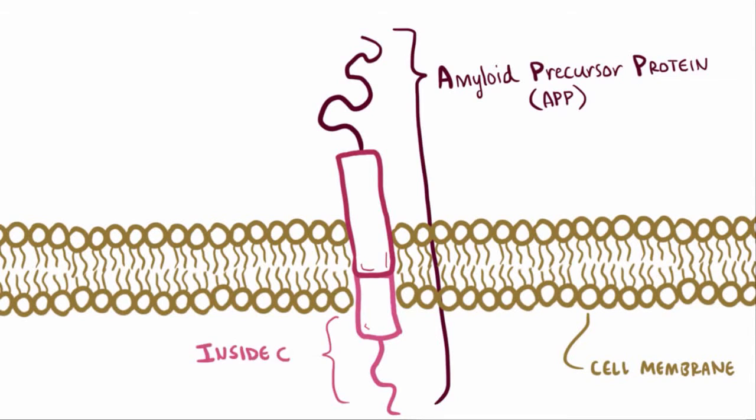One end of this guy is in the cell, and the other end is outside the cell. It's thought that this guy helps the neuron grow and repair itself after an injury.